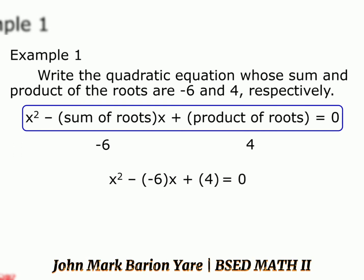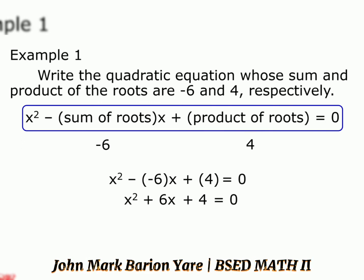x squared minus negative 6 times x becomes positive 6x plus 4 equals 0. The quadratic equation whose sum and product of the roots are negative 6 and 4 is x squared plus 6x plus 4 equals 0.